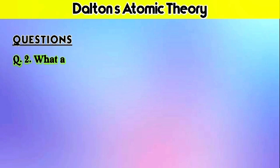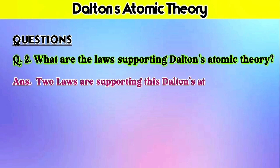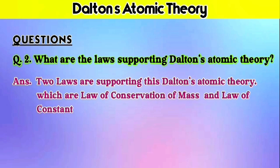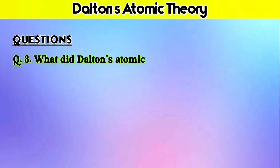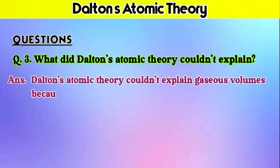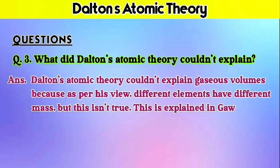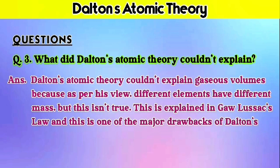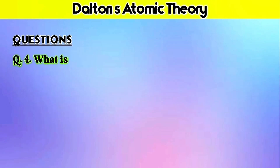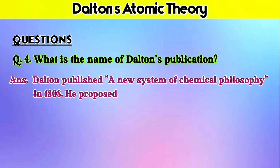Question 3: What did Dalton's atomic theory fail to explain? The answer is that Dalton's atomic theory couldn't explain gaseous volumes. As per his view, different elements have different masses, but this is not always true — it is explained by Gay-Lussac in his law, and this is also one of the major drawbacks of the theory. Question 4: What is the name of Dalton's publication? Dalton published a new system of chemical philosophy in the year 1808, in which he proposed Dalton's atomic theory.